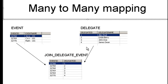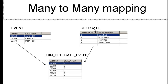In this chapter, let us learn about many-to-many mapping. Imagine I have two tables: event and delegate. The event table has event ID and event name, and the delegate table has delegate ID and delegate name. I want to create a many-to-many mapping between these two tables. An event can be attended by multiple delegates and a delegate can attend multiple events.